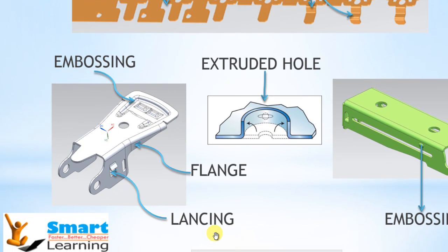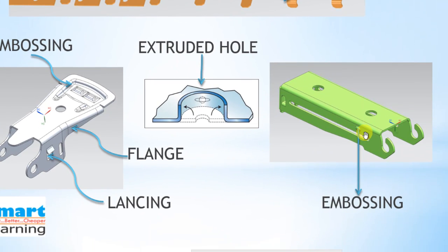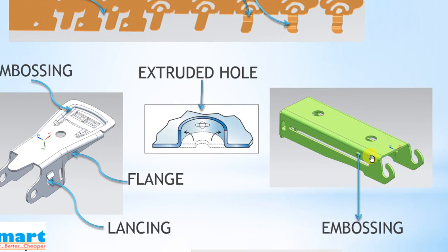Lancing is another operation. It is slightly different from bending. In lancing, at a single stroke there will be cutting as well as bending operation. You can see a small embossing operation embossed in this sheet metal part also.